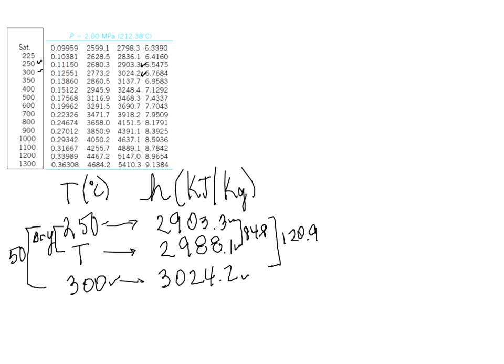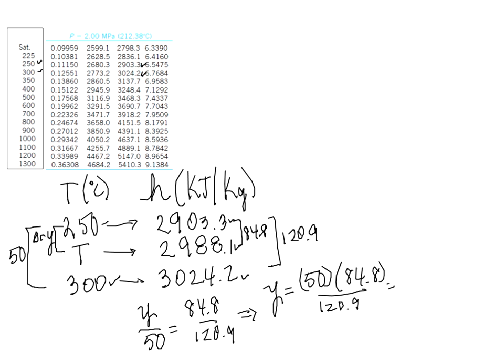So what I'm going to do is create a ratio or a relationship that the difference between the first two values of temperature, which is Y, is to 50, the way that 84.8 is to 120.9. From this, I will solve for Y. So Y would be equal to 50 times 84.8 divided by 120.9, which is 35.07.